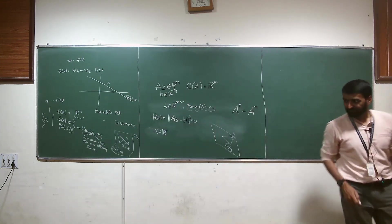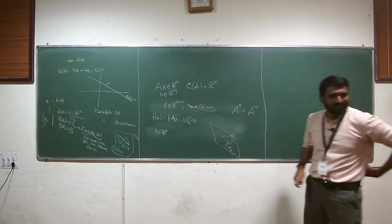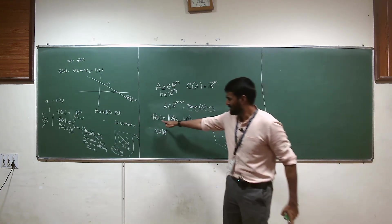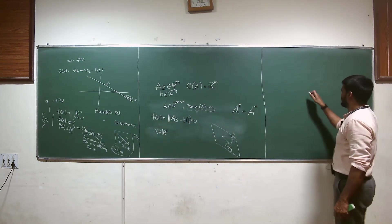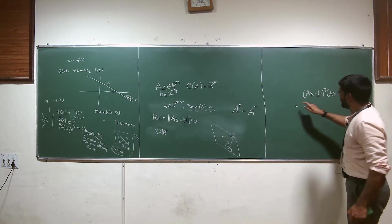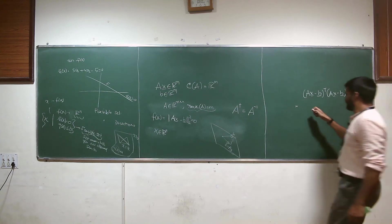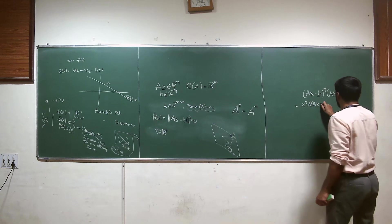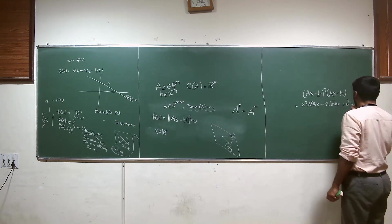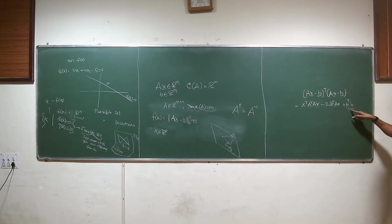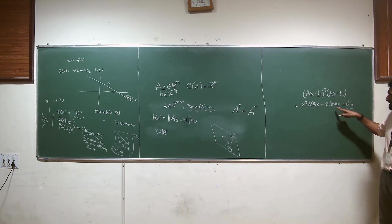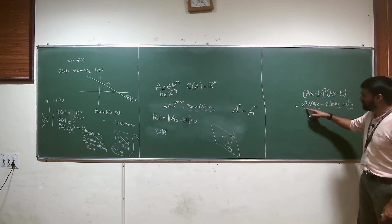Ax minus b equals zero can always be solved. That means the lowest possible value for ||Ax - b|| if A has rank m is zero. This is a scalar — when you multiply it out, you get xᵀAᵀAx minus 2bᵀAx plus bᵀb. This is a scalar; these are vectors from Rᵐ, so it's an inner product — a scalar.